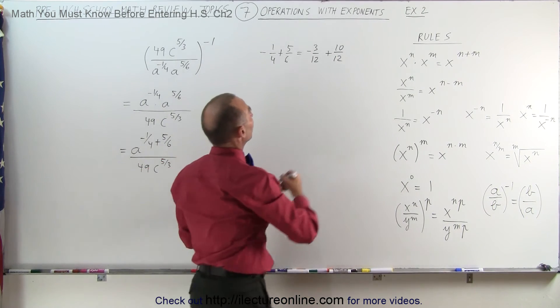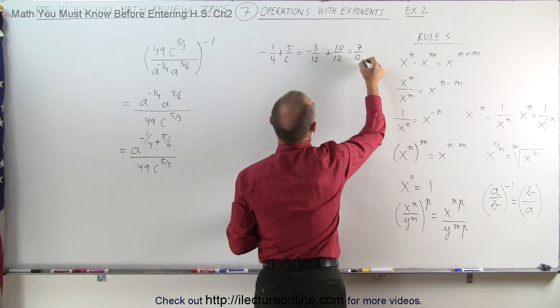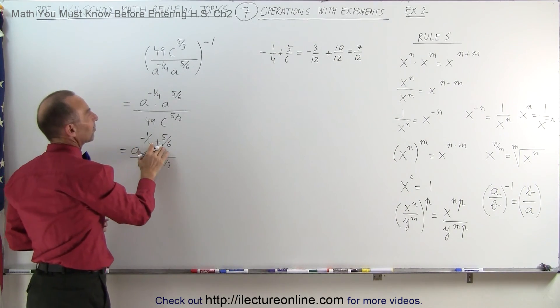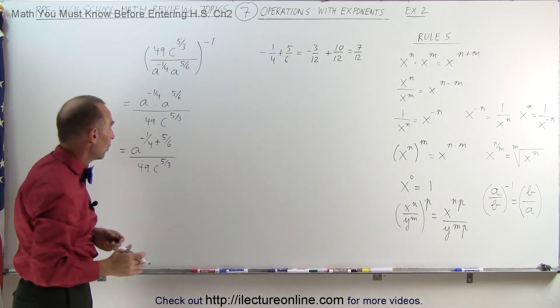Now I can add those together. This is equal to 7 divided by 12. In other words, the exponents, minus 1 fourth plus 5 sixth, can be written as 7 twelfths.